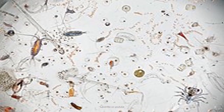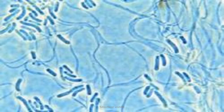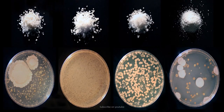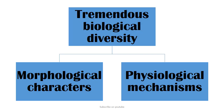They also live in deserts, in deep sea, in hot springs, and in saline environments. There is a tremendous biological diversity among microorganisms — they differ in their morphological characteristics as well as their physiological mechanisms.